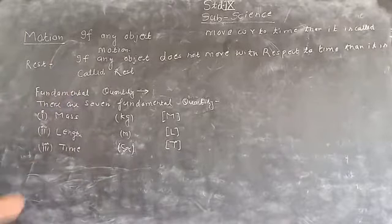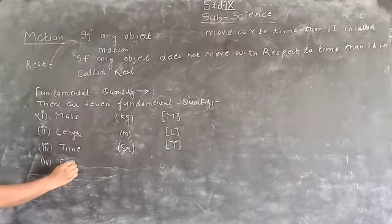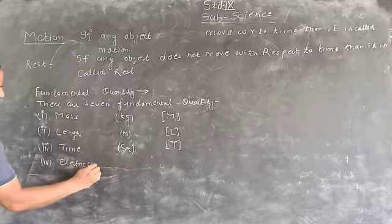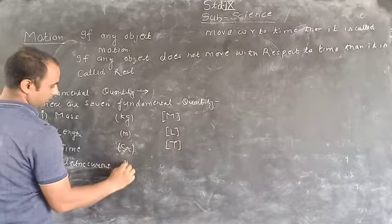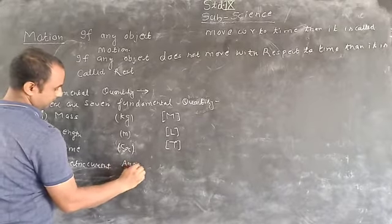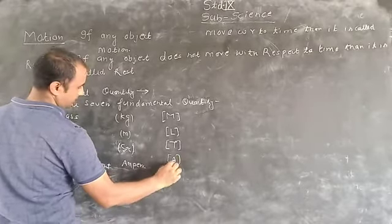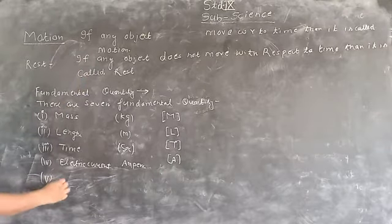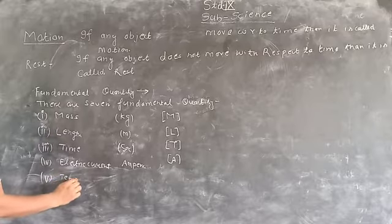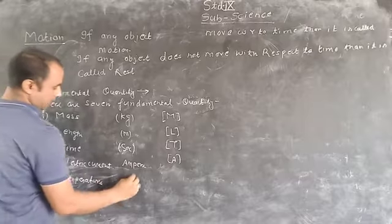The fourth fundamental quantity is temperature, measured in Kelvin, symbol K.